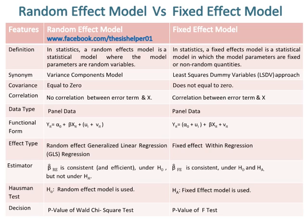The estimator Beta Cap for the Random Effect Model is consistent and efficient under H0, but not under HA, whereas the estimator Beta Cap for the Fixed Effect Model is consistent under H0 but not under HA. The null hypothesis of the Hausman Test is that the Random Effect Model is used, whereas the alternative hypothesis is that the Fixed Effect Model is used. The decision in the Random Effect Model is based on the p-value of the Wald chi-square test, whereas in the Fixed Effect Model it is based on the p-value of the F-test.